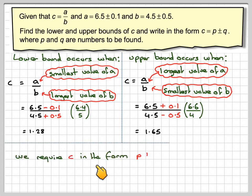We're required c in the form of p plus or minus q, so how do we find p? You have to take the mean of 1.28 and 1.65. 1.65 plus 1.28 divided by 2, and that gives me 1.465.